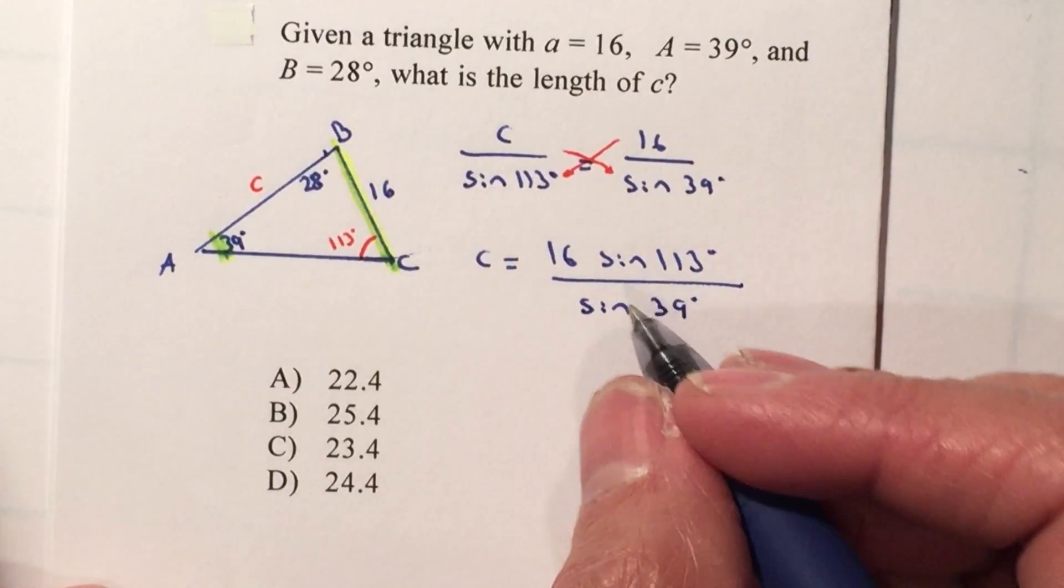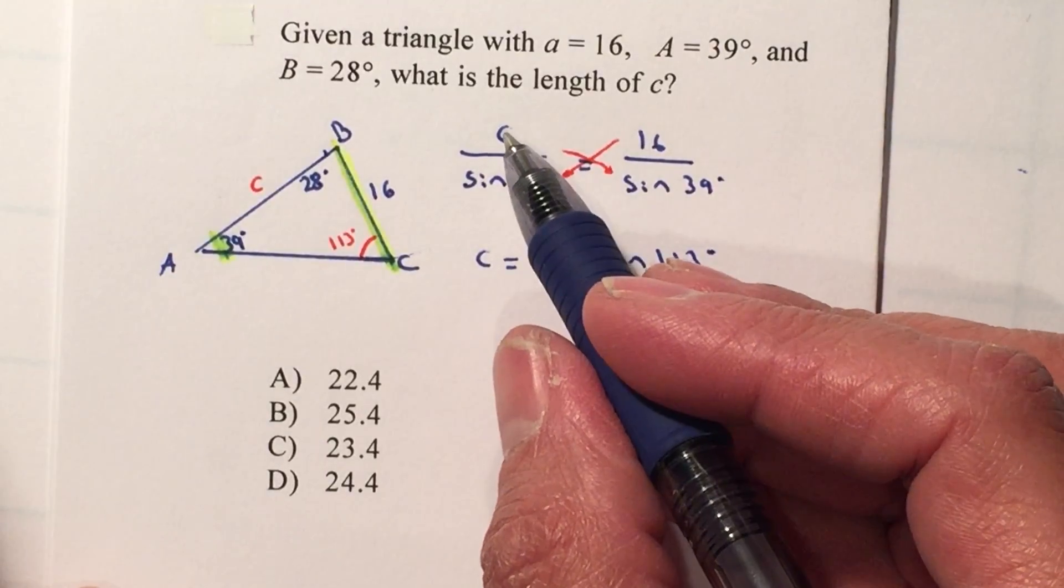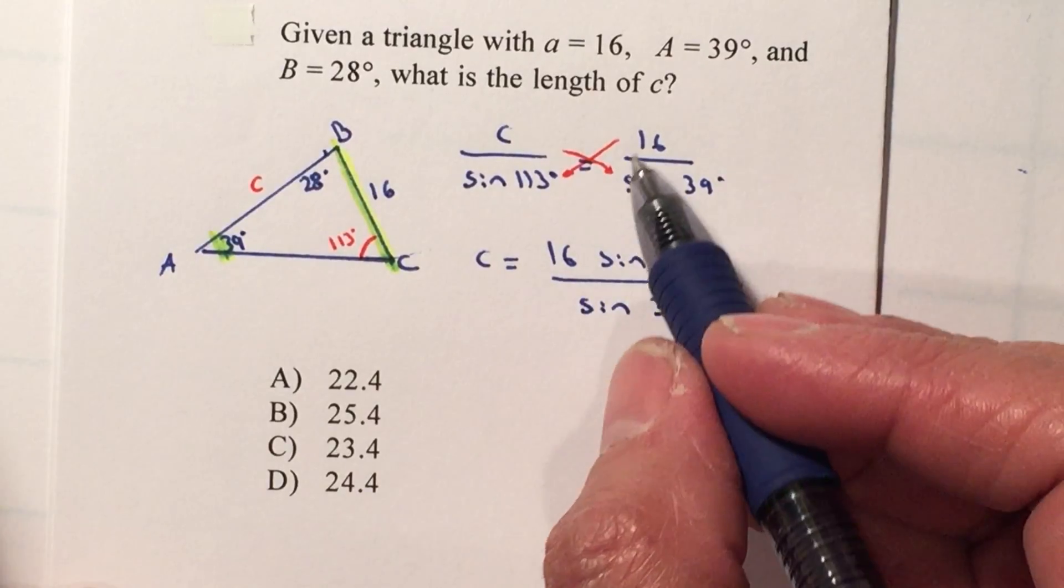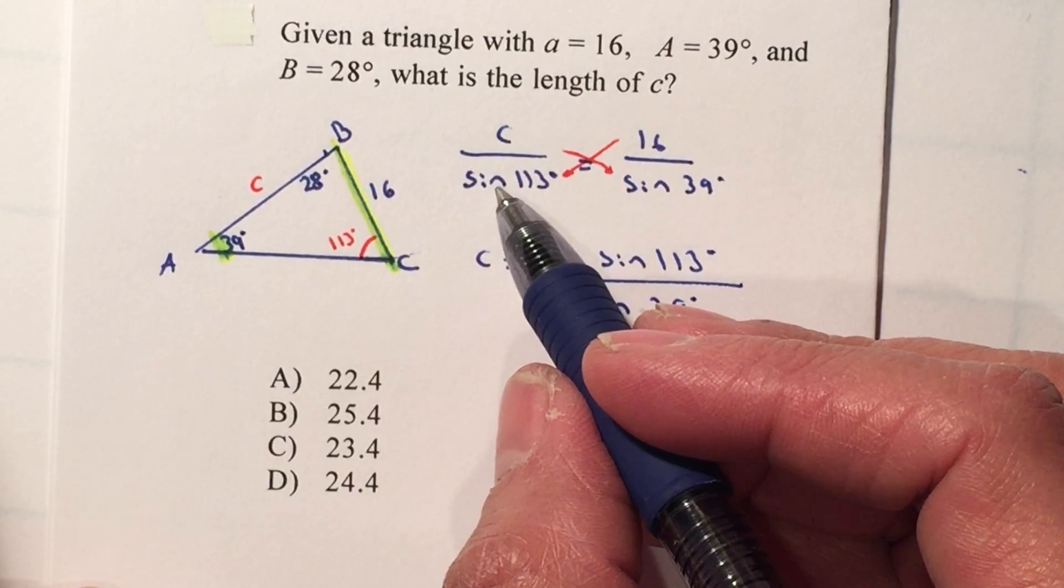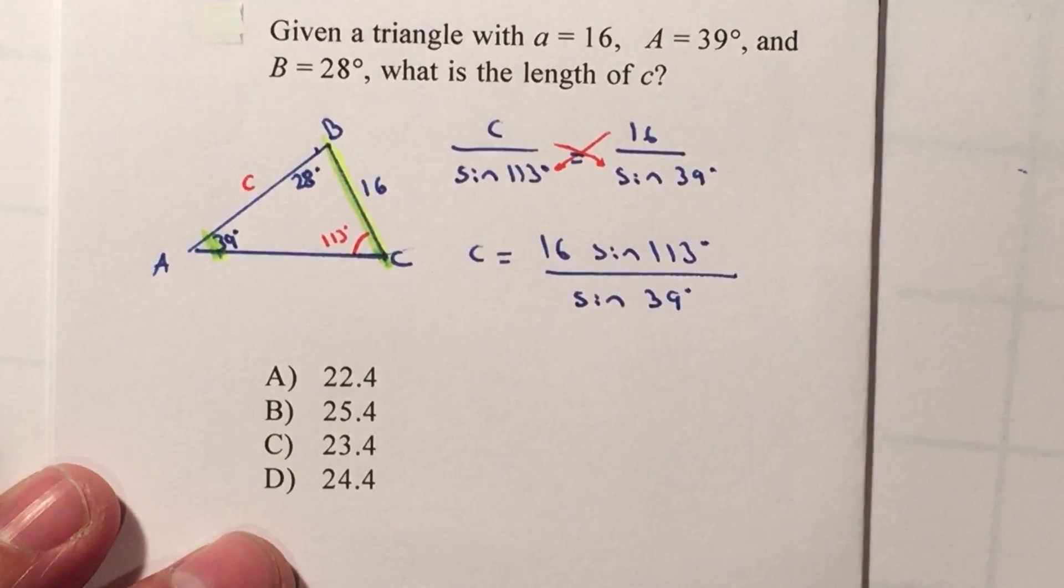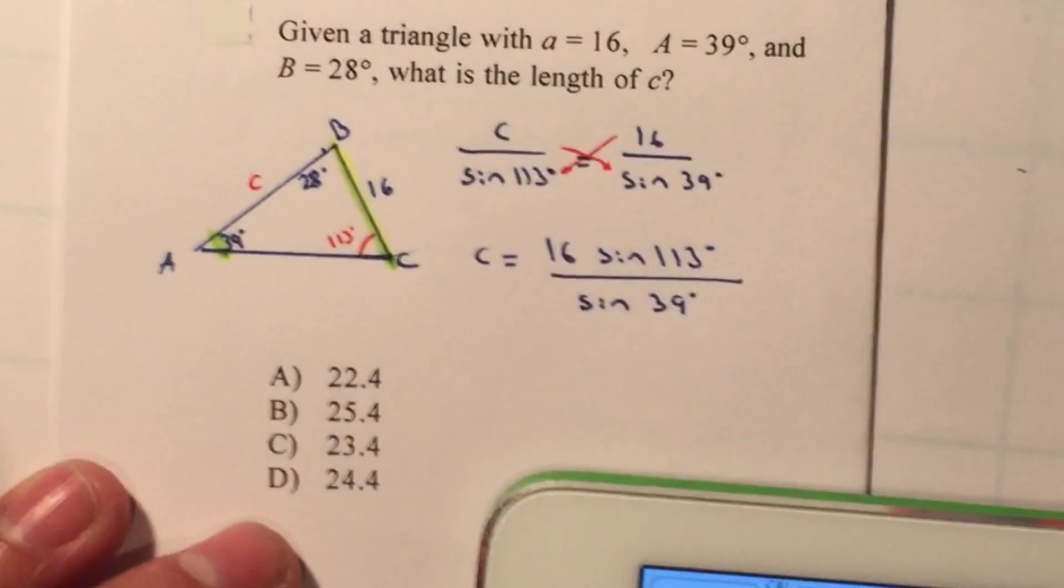We've done this many times so you should be used to it. If not, just go through the process. C multiplied by the sine of 39, 16 multiplied by the sine of 113, and then divide. I'm going to tap into my calculator and that should give me my answer.